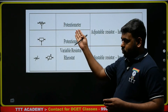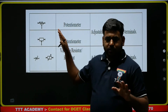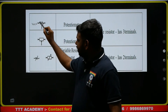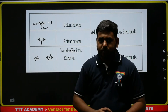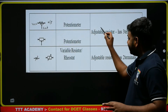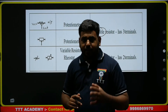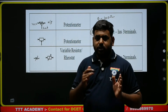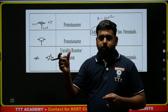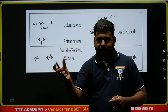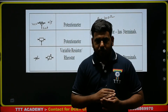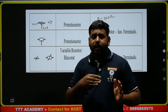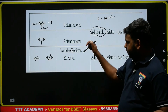Next, potentiometer. A potentiometer is similar to a resistor, but it has three terminals — one is VCC (input), one is ground, and one is output. It is an adjustable resistor; we can adjust and vary it. For example, if the range is 0 to 100 ohms, we can select any value from 0 to 100. In an experiment, if we need 50 ohms, we regulate the potentiometer to 50 ohms and continue the experiment.